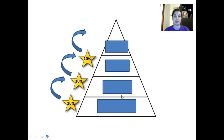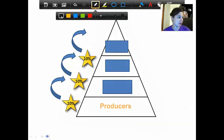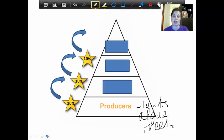Down here at the base of the pyramid, at the bottom, we've got our producers. So we've talked about what producers are already, right? Those are examples of our producers: plants, algae, trees. We've gone over this many times now, so you guys should be familiar with that.